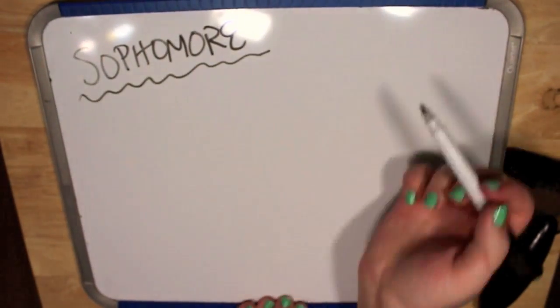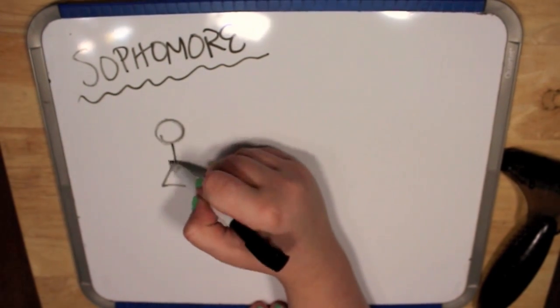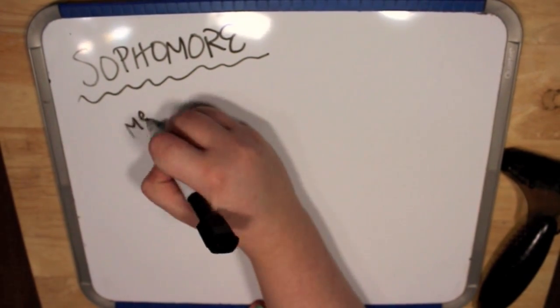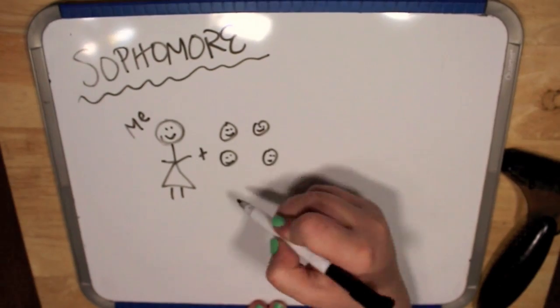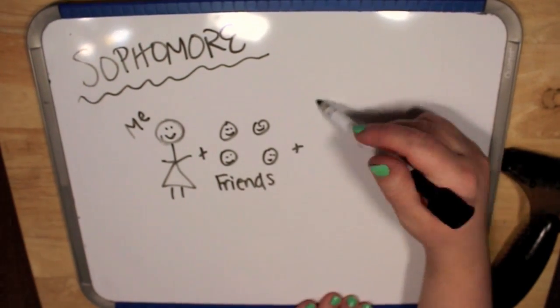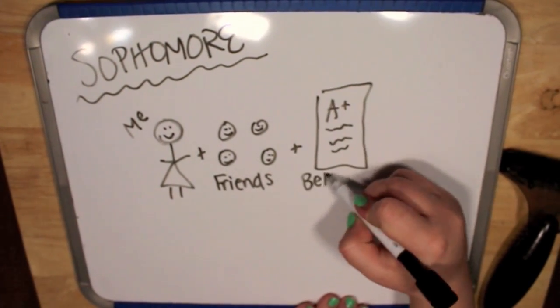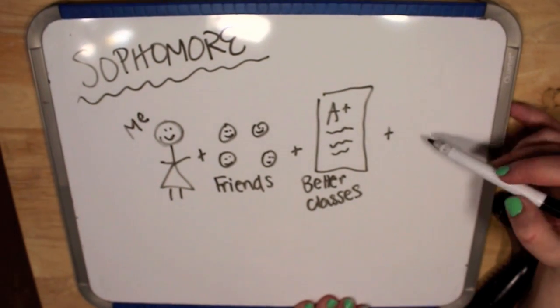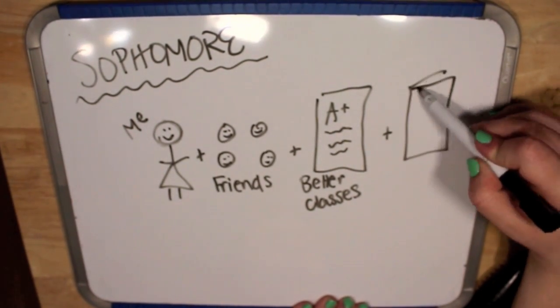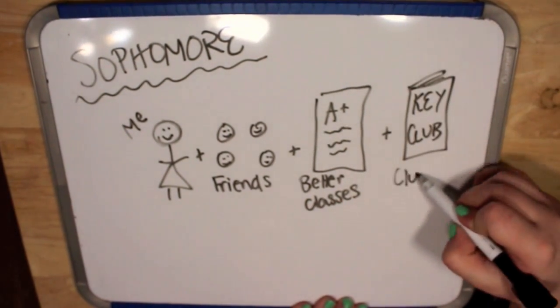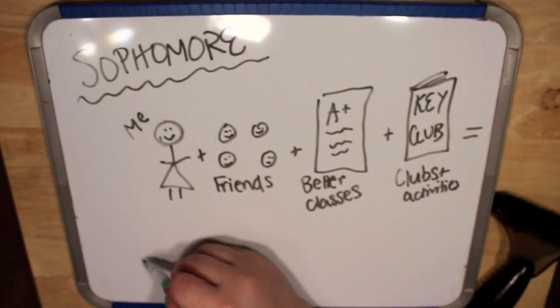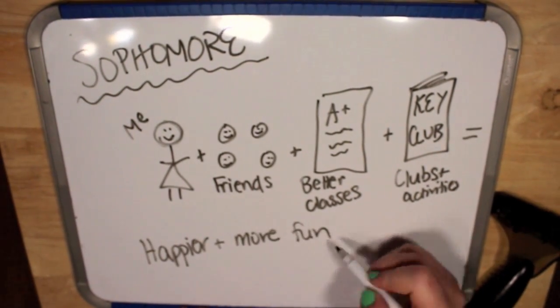So, start off my year. Things are a lot better for me this year because I had already kind of made some friends at the end of freshman year. So, I had friends. And I took better classes. And I got involved more by doing clubs and activities at the school. And it was just a lot better for me. You know, I was happier and having more fun.